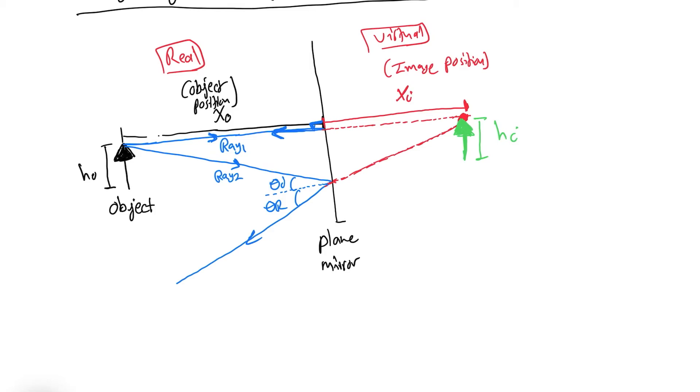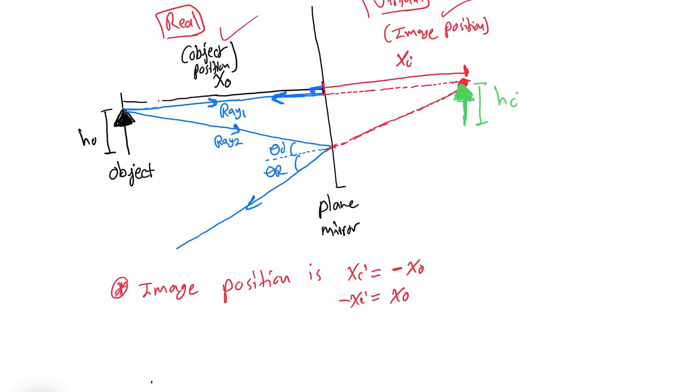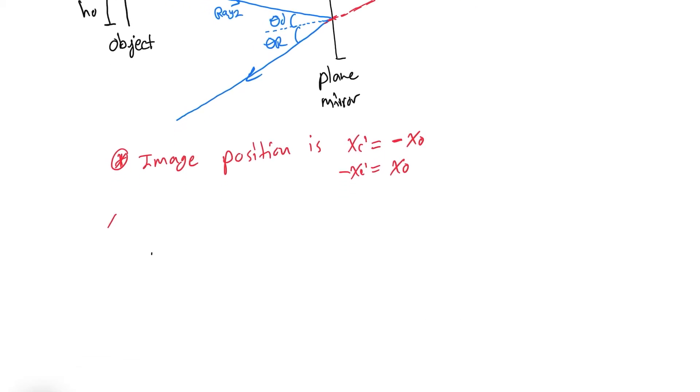In a plane mirror, we have the following conclusion. The image which is formed is represented as the following: the image position xi equals negative xo, or we can say negative xi equals xo. The minus sign just simply means that one of them is on the real side and the other one is in the virtual side. They are not both at the same ends; one of them is the opposite side of the mirror. And the height of the image, hi, equals ho.